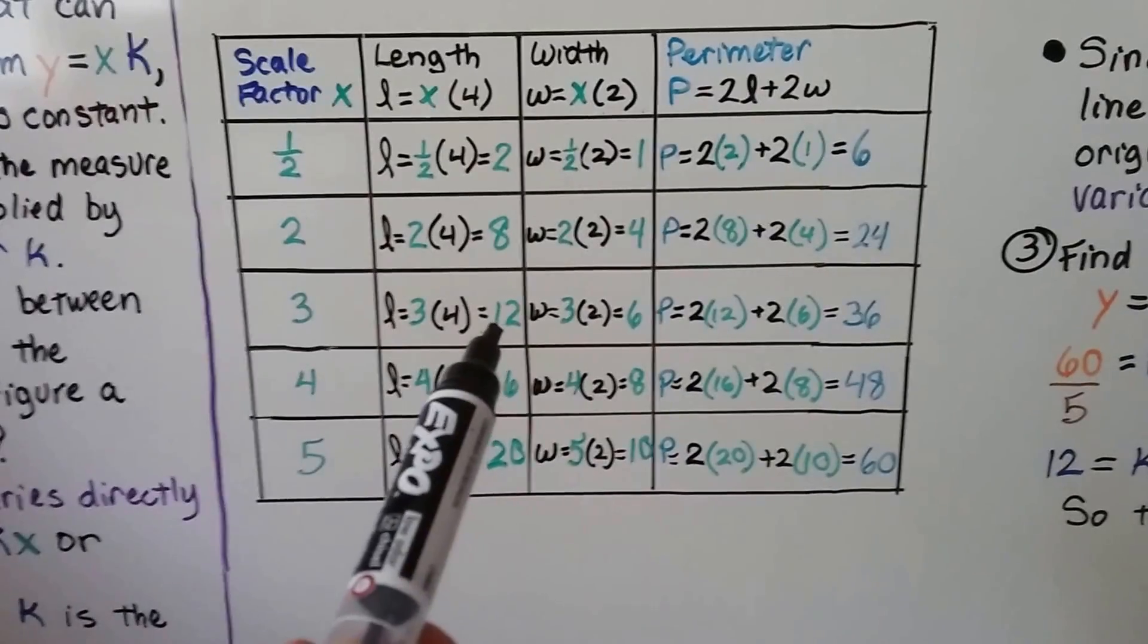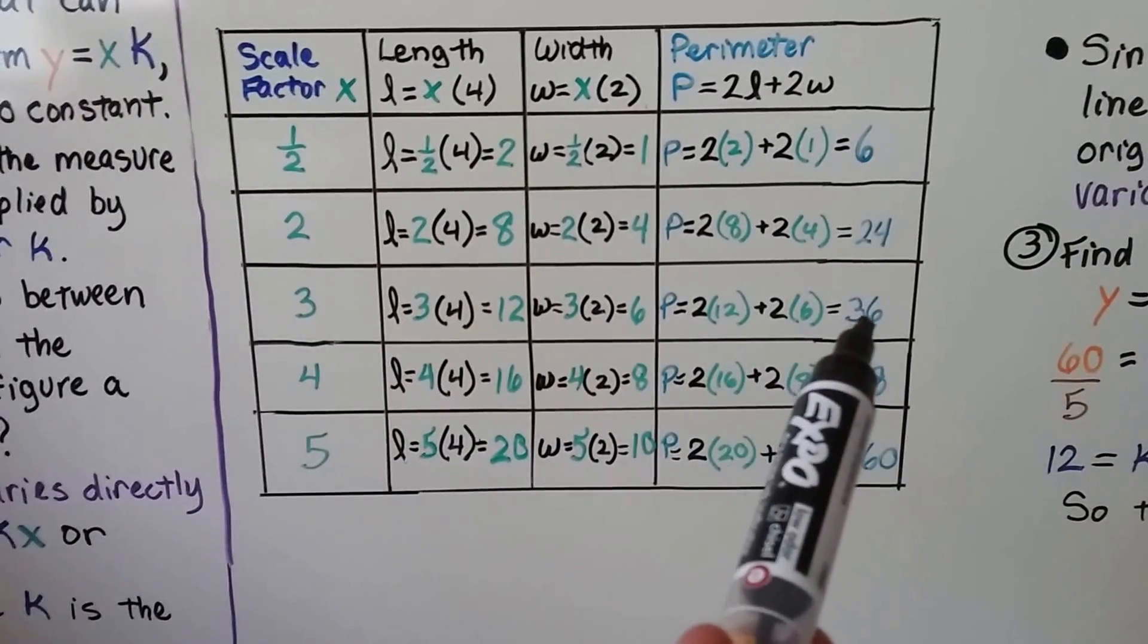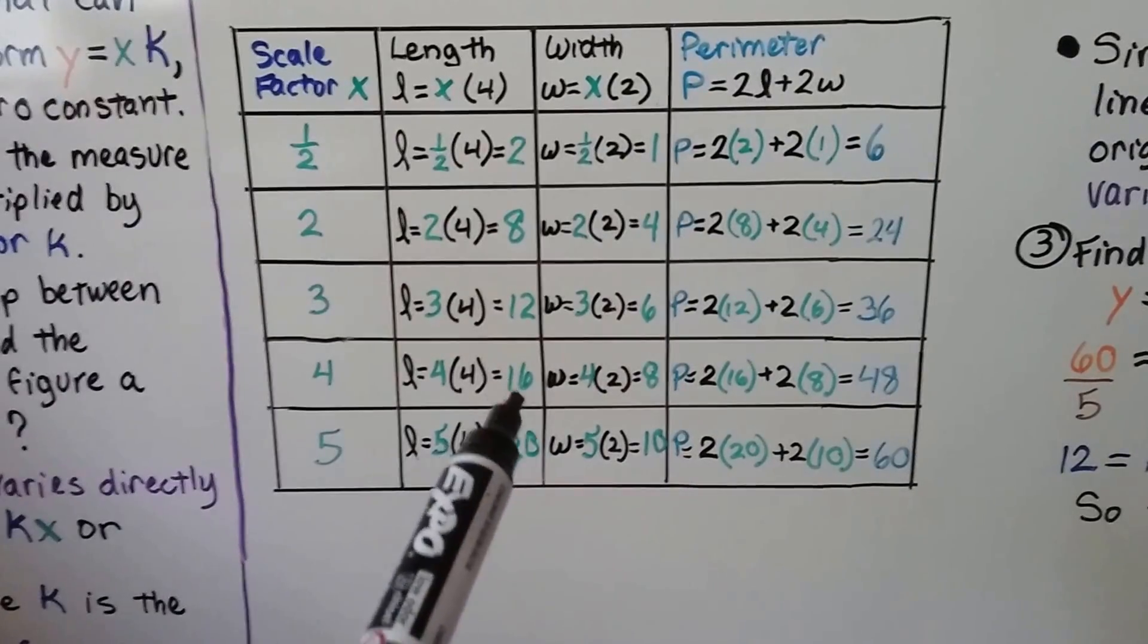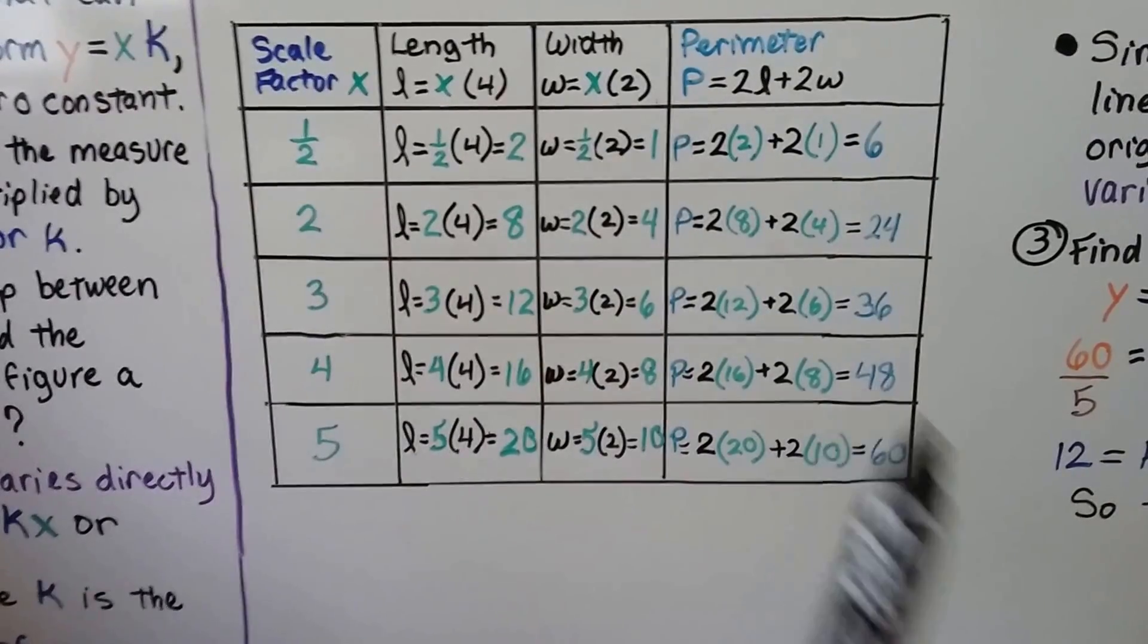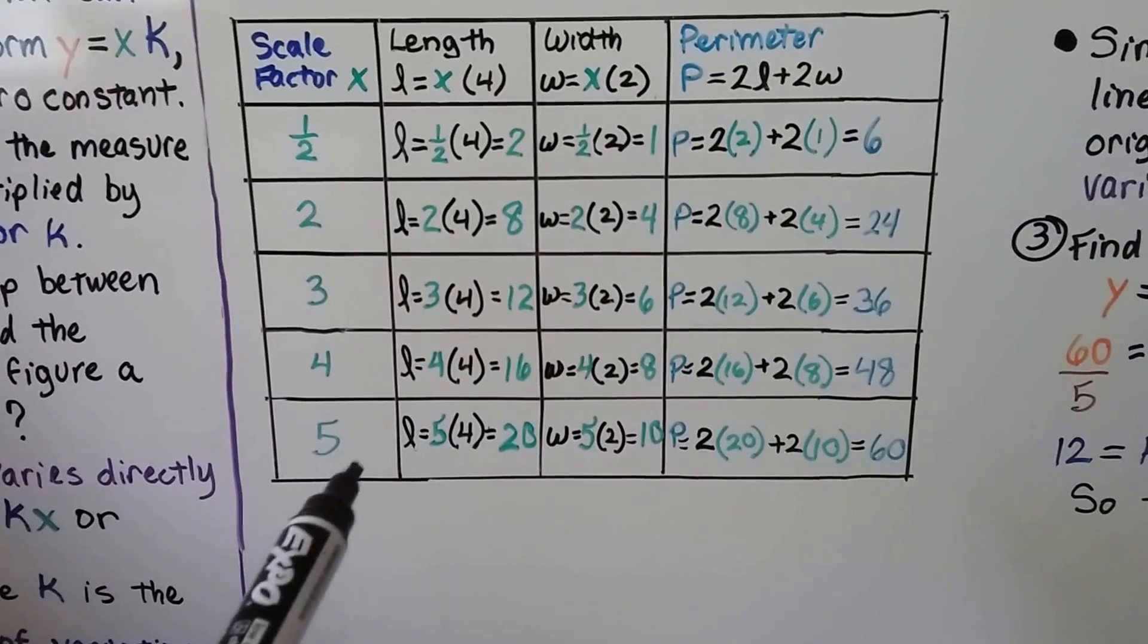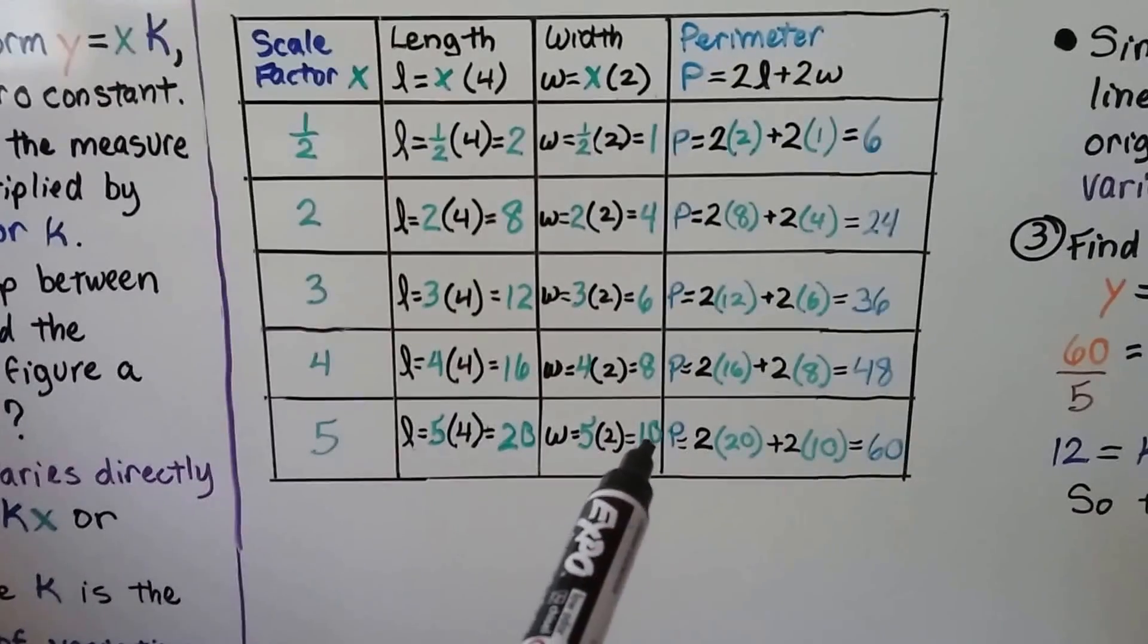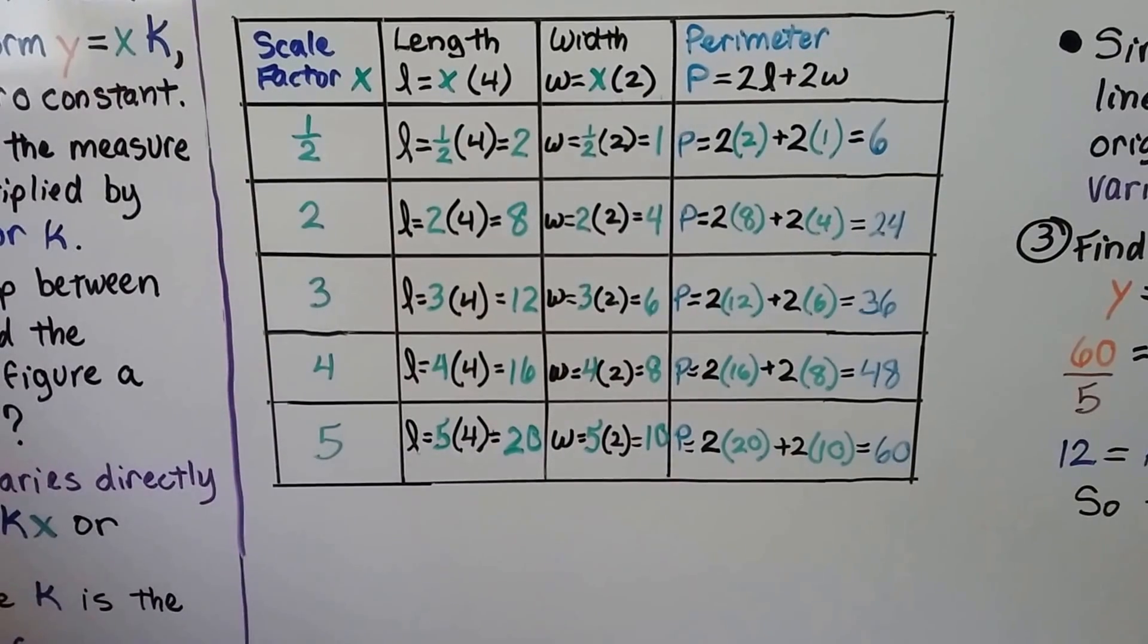For 3 we'll have a 12, a 6, and a 36. If the scale factor is 4, the length will be 16, the width will be 8, and the perimeter will be 48. And if the scale factor x is a 5, we'll have a length of 20, a width of 10, and a perimeter of 60.